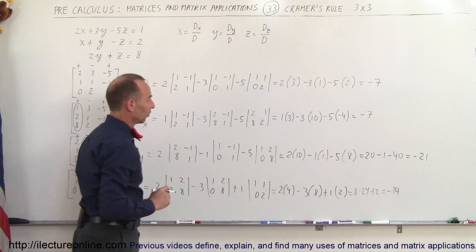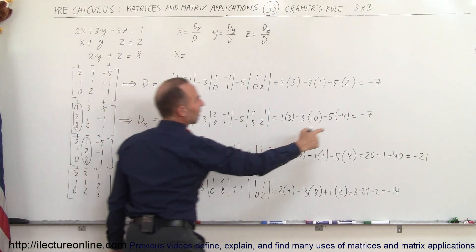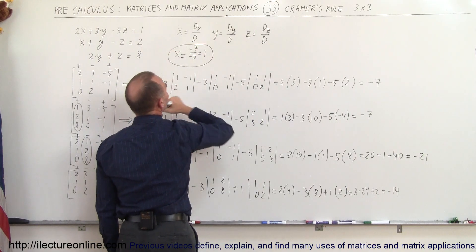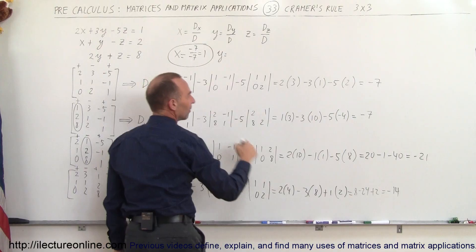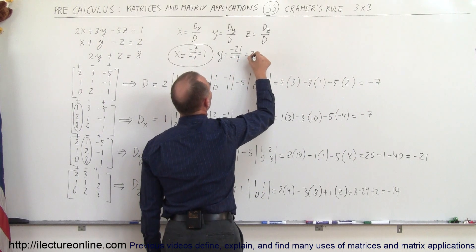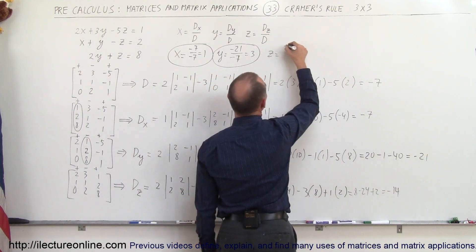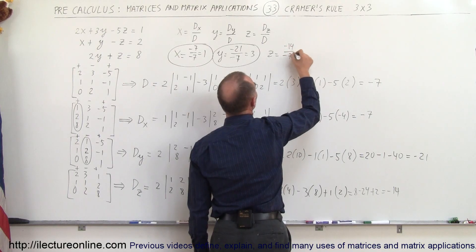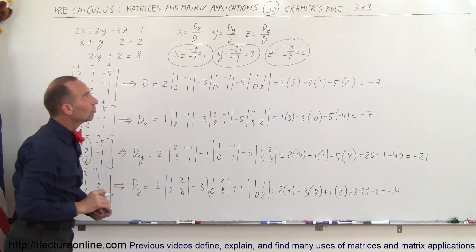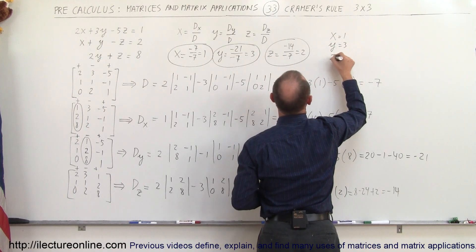Now we can find all the values. x is equal to d sub x divided by d, which is minus 7 divided by minus 7, equal to 1. y is found by taking d sub y divided by d, which is minus 21 divided by minus 7, equal to 3. And z is equal to d sub z divided by d, which is minus 14 divided by minus 7, equal to 2. So x equals 1, y equals 3, and z equals 2.